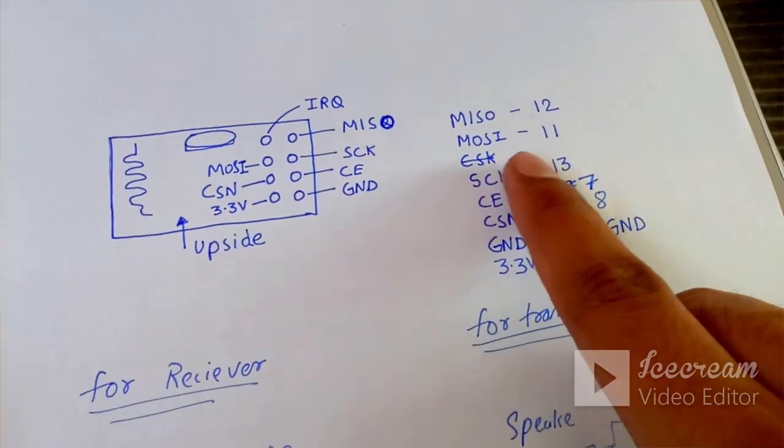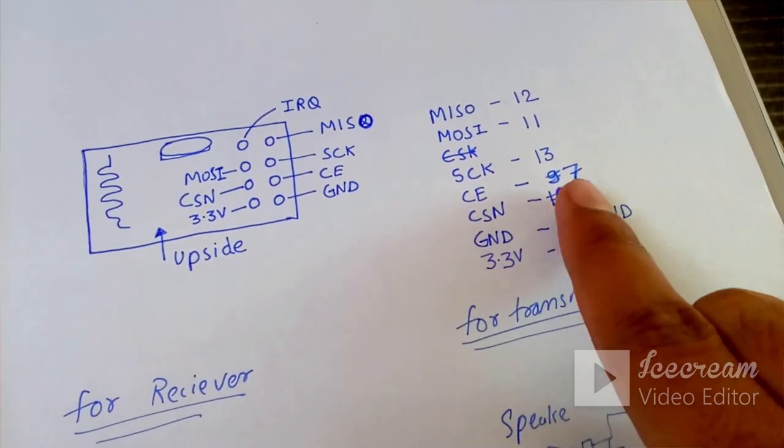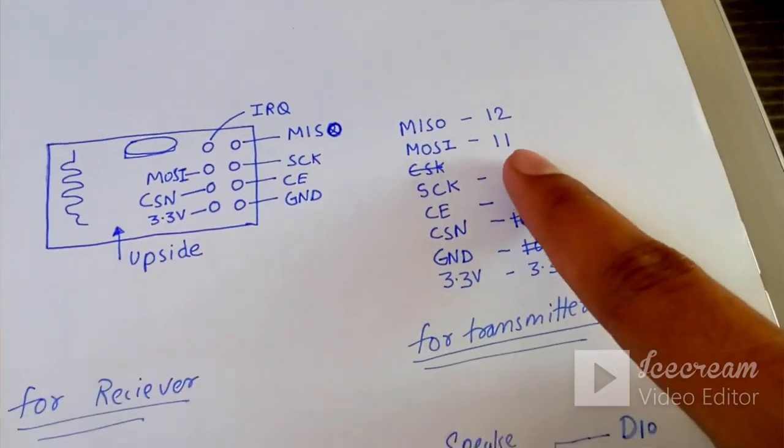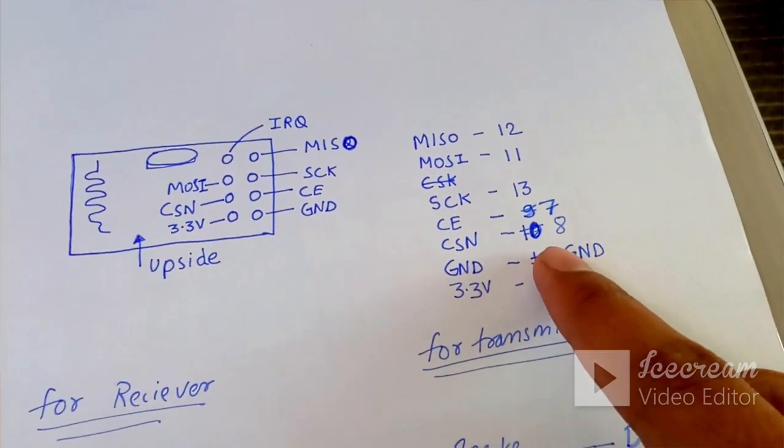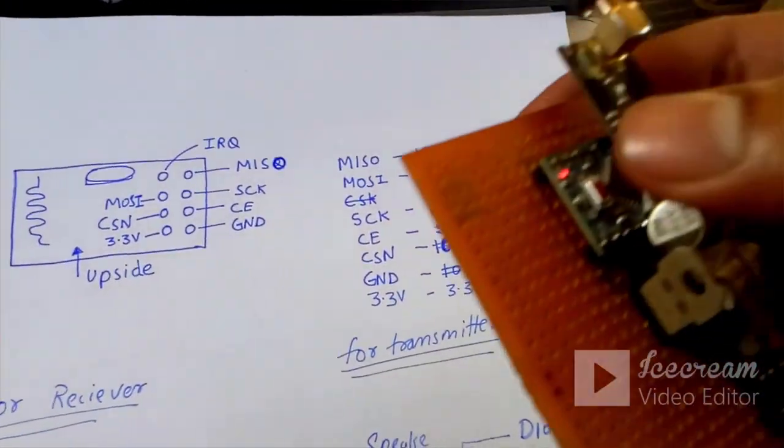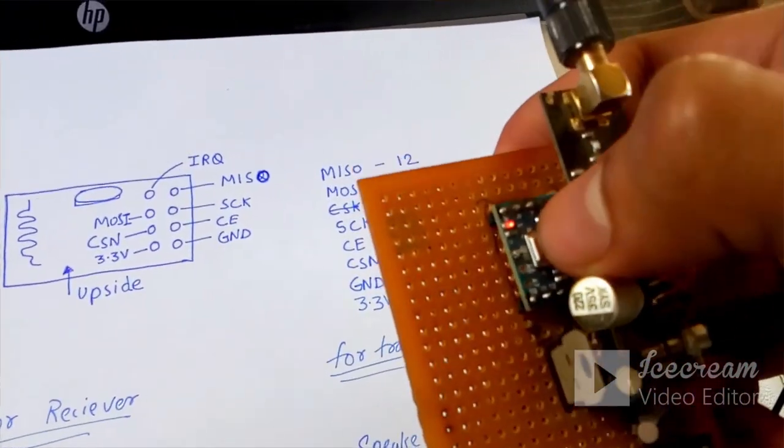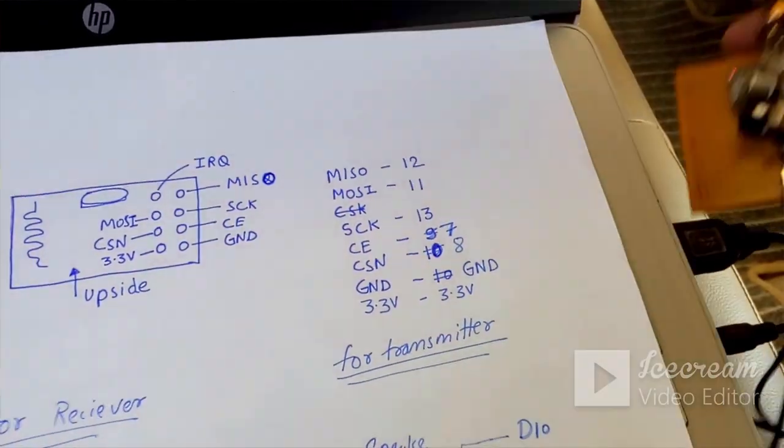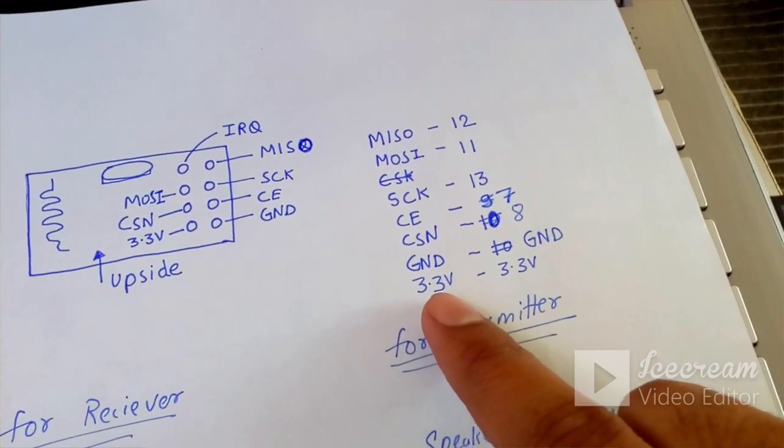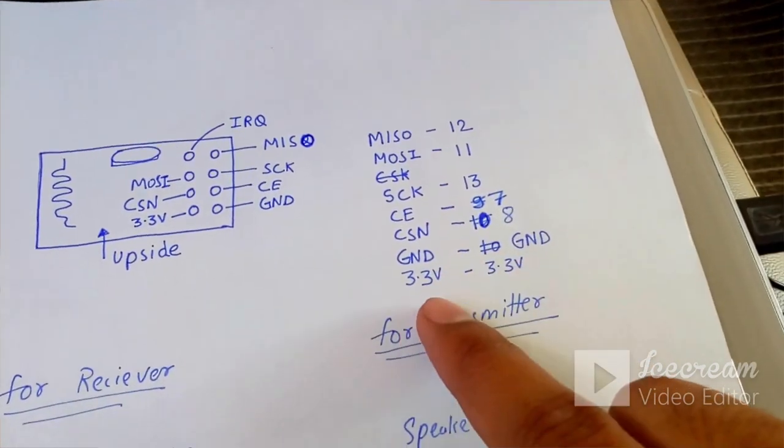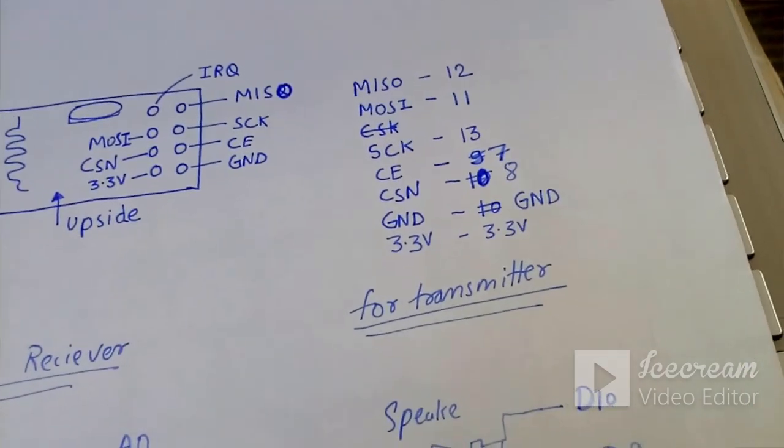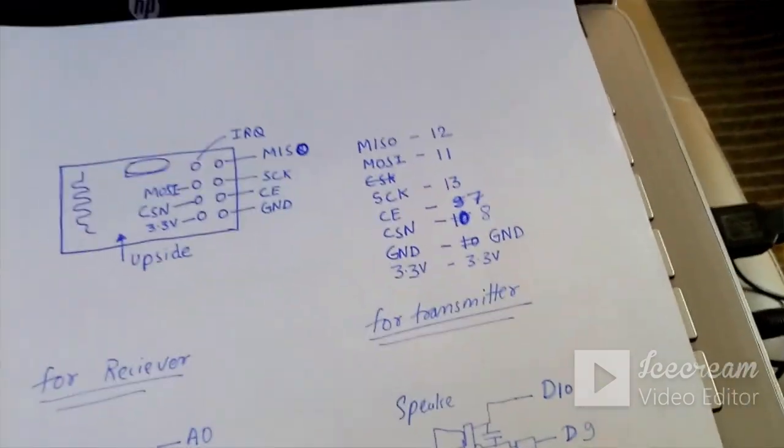MOSI will be 11 and respectively all this will be connected to your Arduino, or you can use any kind of Arduino. The pin numbers will be same. For my project I did use the Arduino Micro Mini Pro - this one, the base plate is actually Arduino. And remember one thing, that this module requires 3.3 volts.